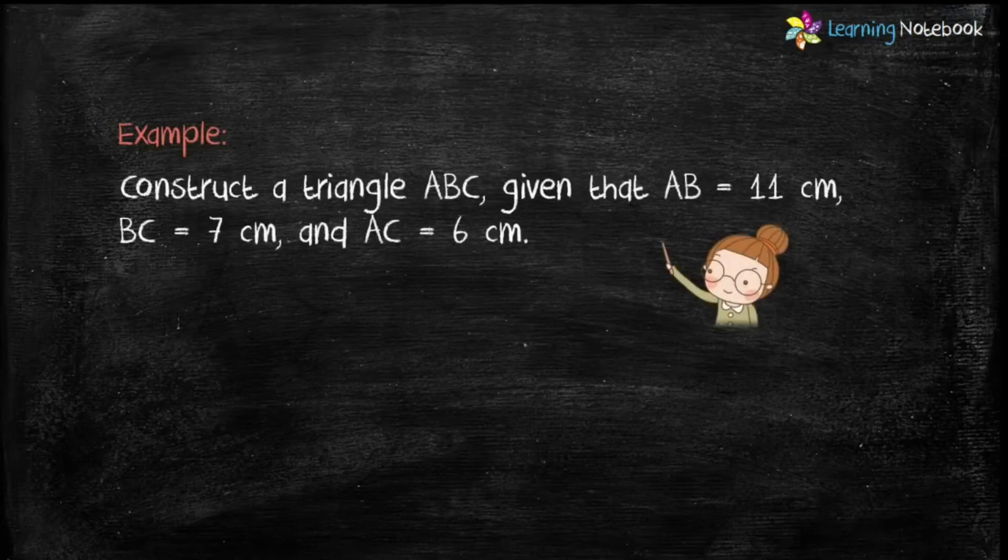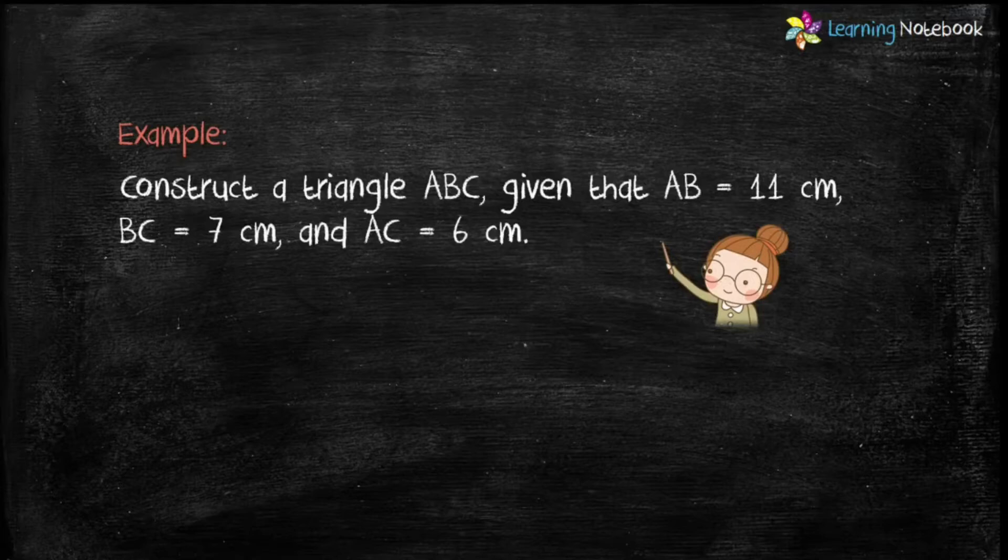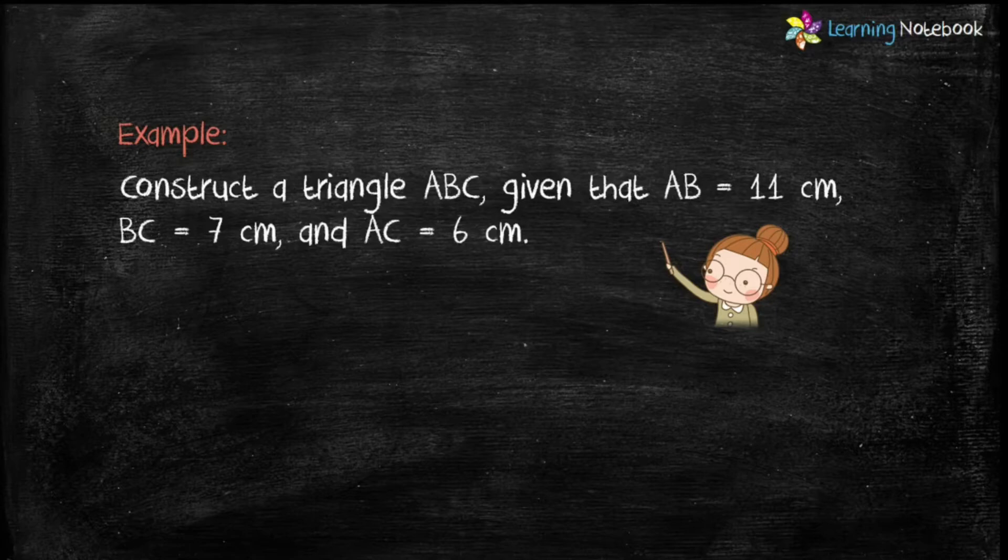Question is, construct a triangle ABC given that AB equals to 11 cm, BC equals to 7 cm and AC equals to 6 cm.